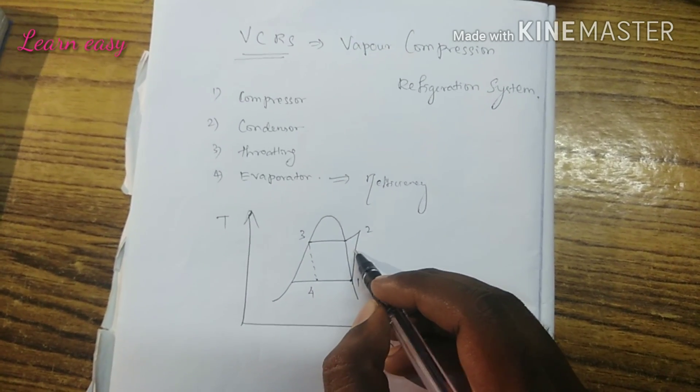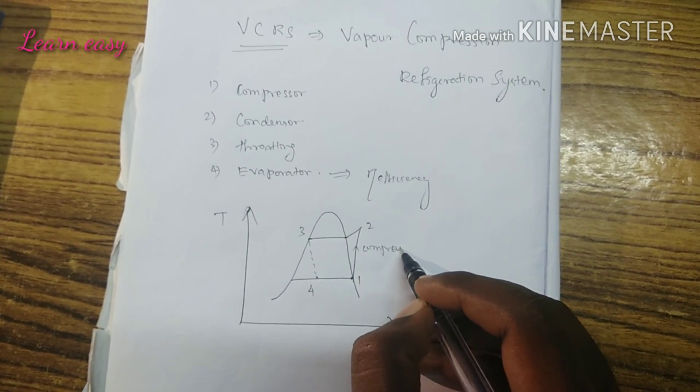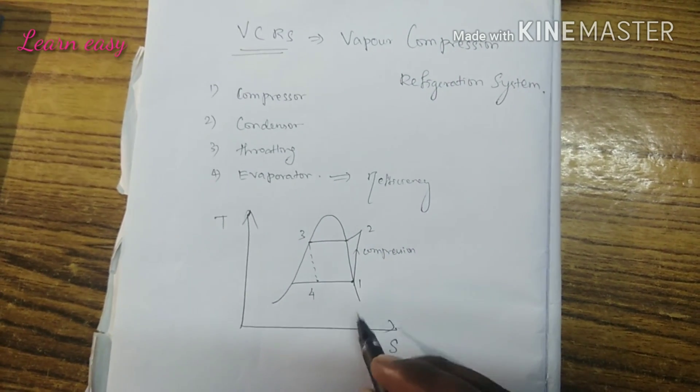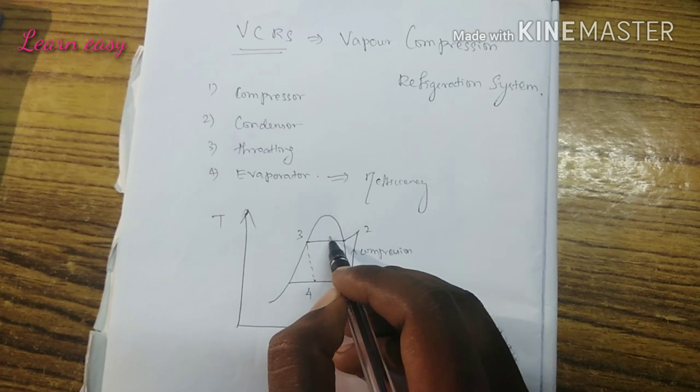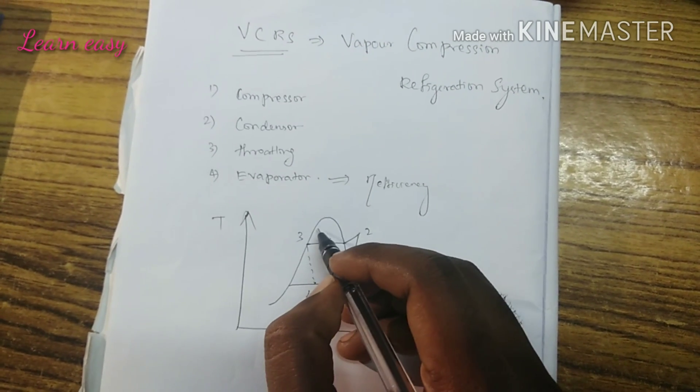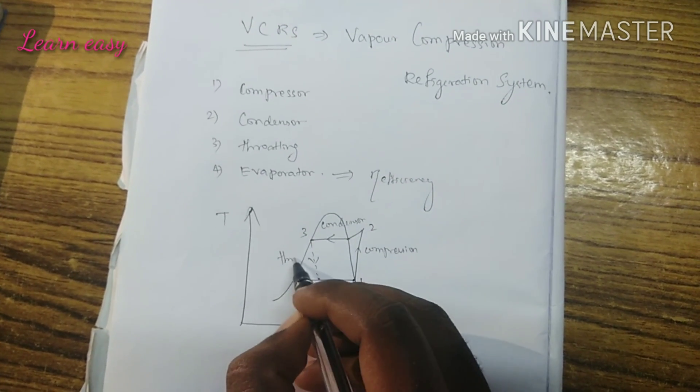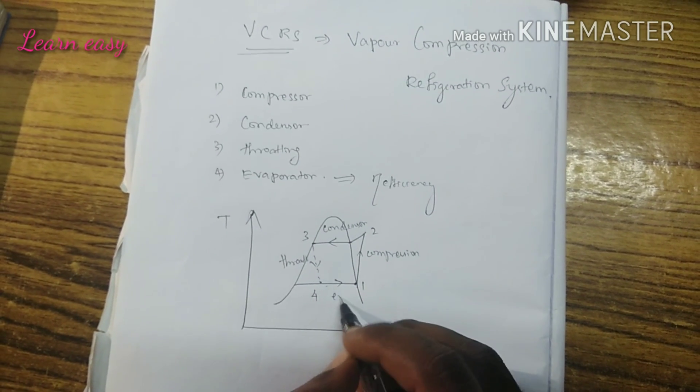Points 1 to 2 represent the compressor. Compression is done under constant entropy. 2 to 3 is the condenser, 3 to 4 is throttling, and 4 to 1 is the evaporator.